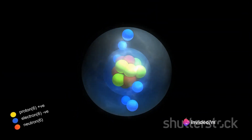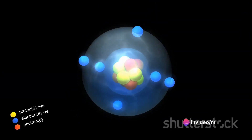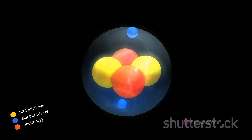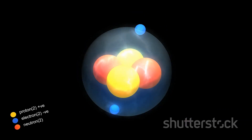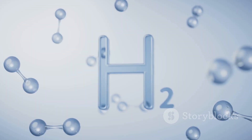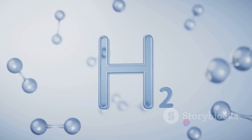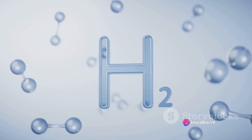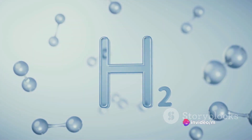While these molecules of elements might seem similar to molecules formed from different elements, there's a key distinguishing feature. Molecules of elements are like an exclusive dance troupe, only containing one type of atom. In contrast, molecules formed from different elements are like a mixed troupe, with at least two distinct types of atoms.